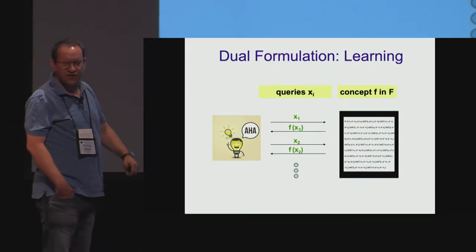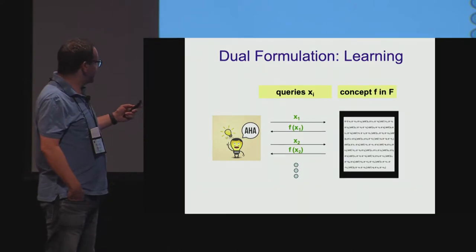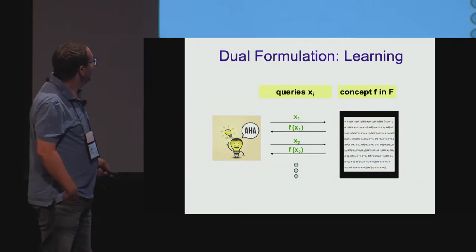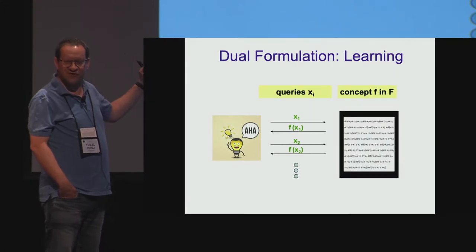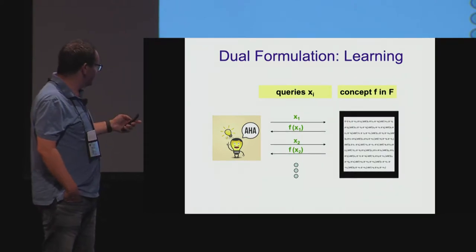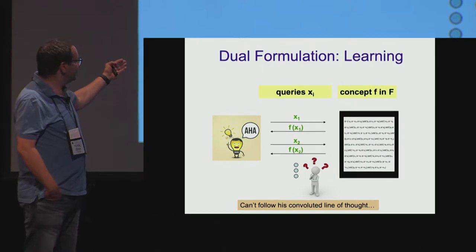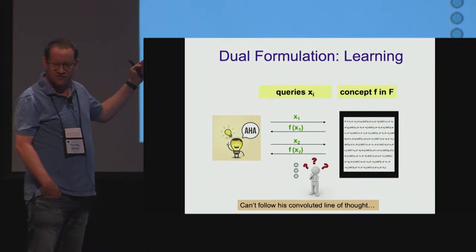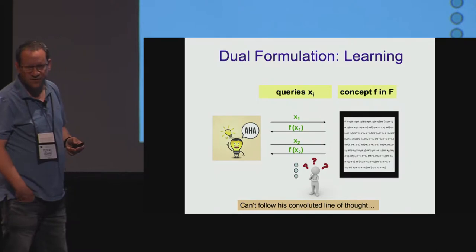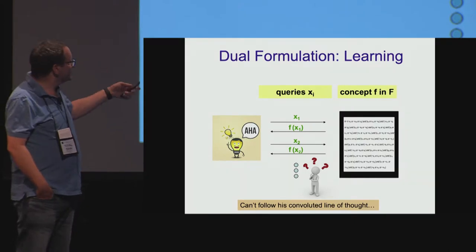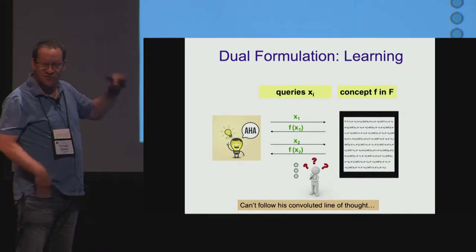There is also a more mainstream dual interpretation in the language of computational learning theory. Here you swap the role of the function class and the object. The secret is some concept or function f in a function class F, say a CNF formula. You pick a carefully chosen set of questions or queries to the function that will allow you to figure out what f is, being a computationally bounded learning algorithm. Yet an external observer can see the entire training sample but cannot make sense of it, because they don't know the line of thought that led you to pick these particular queries. In the rest of the talk, I'll stick to the sensing formulation.